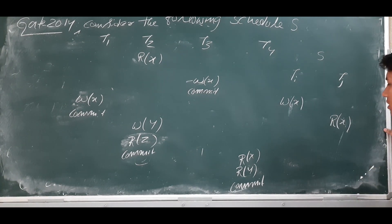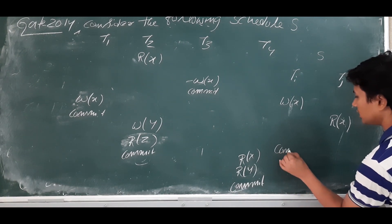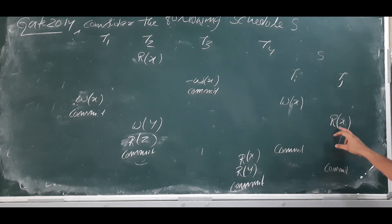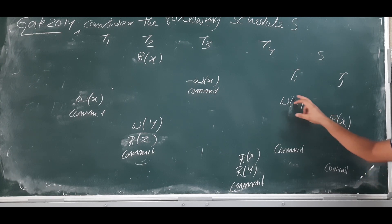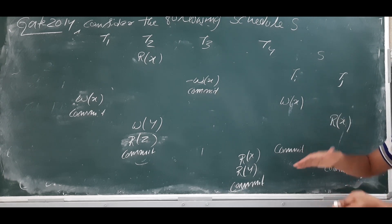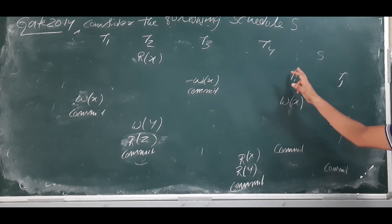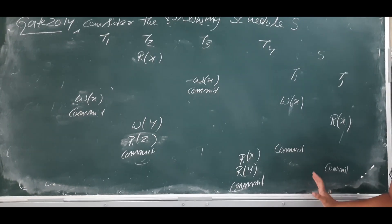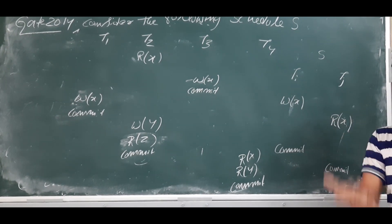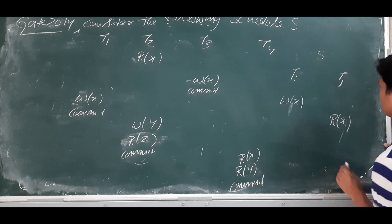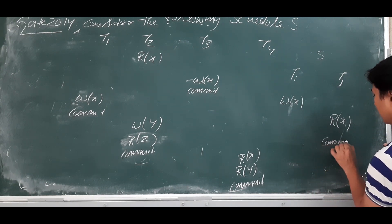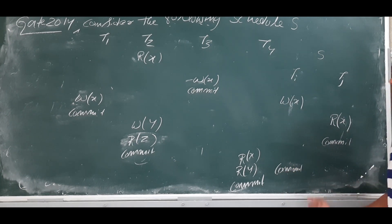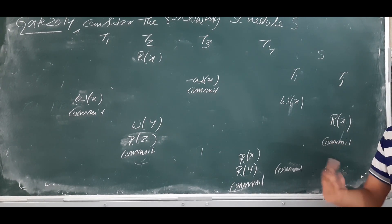Now, for commit operations: transaction Ti should commit first, then transaction Tj should commit. Transaction Tj is reading the modified content of Ti, so the commit sequence must be Ti commits first, then Tj commits. If this order is followed, it is a recoverable schedule. If the order is reversed — Tj commits before Ti — then it is an irrecoverable or unrecoverable schedule.